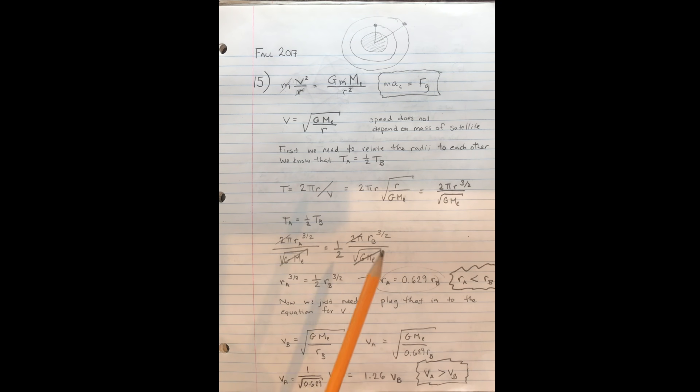Now, in order to move on, we're told that the period of satellite A is half of that of satellite B, and we need to use this fact to relate the two radii to each other. Well, how do you determine the period of circular motion? You take the circumference of the orbit, which is 2πr, and then you divide it by the speed. It's just distance over speed equals time.